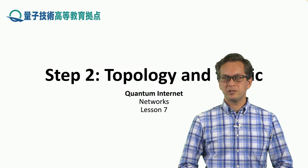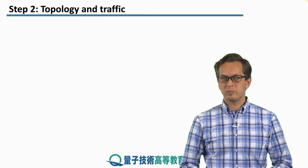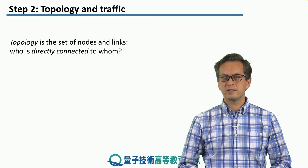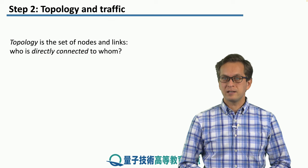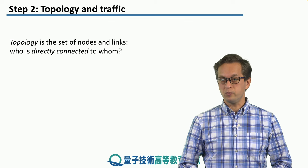Step 2: Topology and traffic. What is topology? Topology is the set of nodes and links in the network, and it tells us who is directly connected to whom.